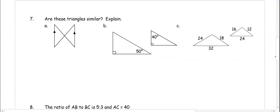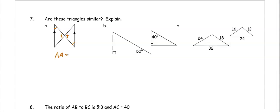In number seven, are these triangles similar? In part a, we have parallel lines, so we can use alternate interior angles. We also have vertical angles that are congruent, so these triangles are similar by angle-angle similarity. In part b, we have a right angle and two other given angles. If we know two angles we can subtract to find the third — the missing angle is 40 degrees in the first triangle and 50 degrees in the second. These triangles have at least two angles the same, so they are similar by angle-angle similarity.